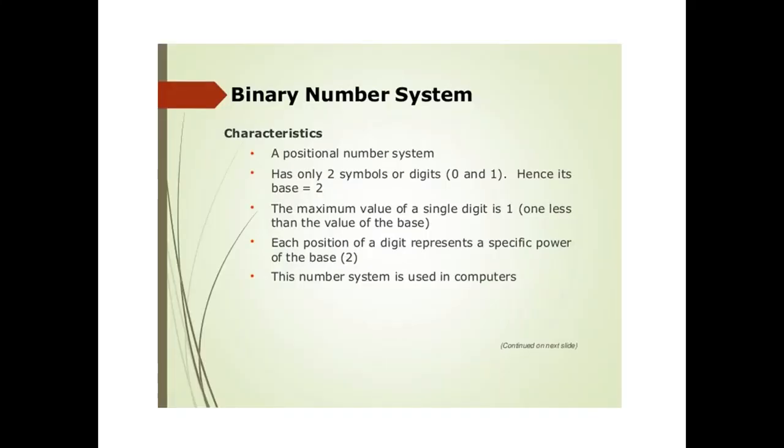Next topic is binary number system. As I have already discussed, whatever we write or whatever instruction we give to computer, it is converted into 0 and 1. Computer understands only binary numbers which are 0 and 1. A positional number system has only two symbols or digits, 0 and 1. Hence its base will be 2. There are two digits only, 0 and 1, so base will be 2. The maximum value of single digit is 1, which is 1 less than the value of the base.